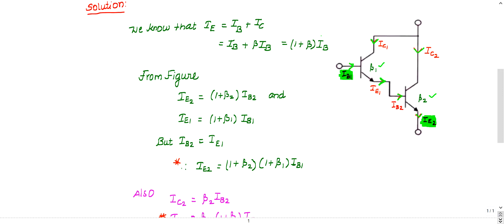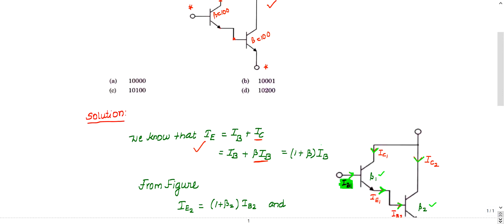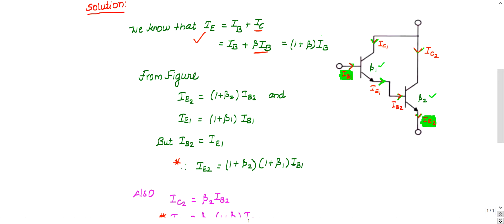Now let me write the relations. The common relation is ie = ib + ic, and ic = β·ib. Neglecting reverse saturation currents (as the question allows), ie becomes approximately (1 + β)·ib. So for the first transistor: ie1 = (1 + β1)·ib1, and for the second: ie2 = (1 + β2)·ib2.